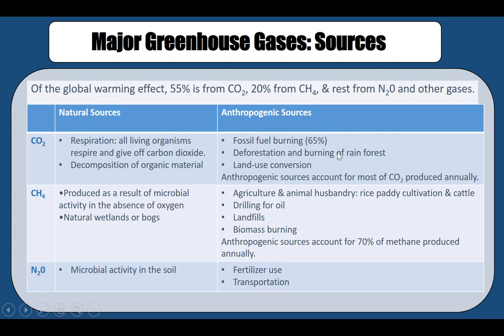The next greenhouse gas is methane. Methane is produced naturally from microbial activity in the absence of oxygen — anaerobic microbial activity — as well as in wetlands. Anthropogenic sources of methane come from agriculture and animal husbandry. For example, rice paddy cultivation requires water at the roots, which creates an anaerobic environment that releases a lot of methane.